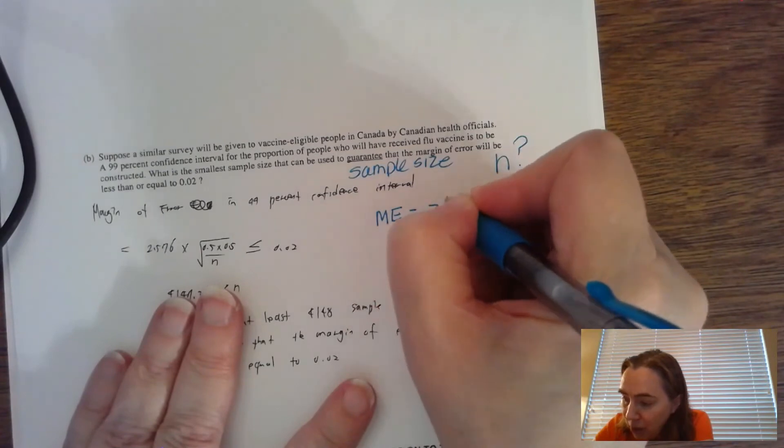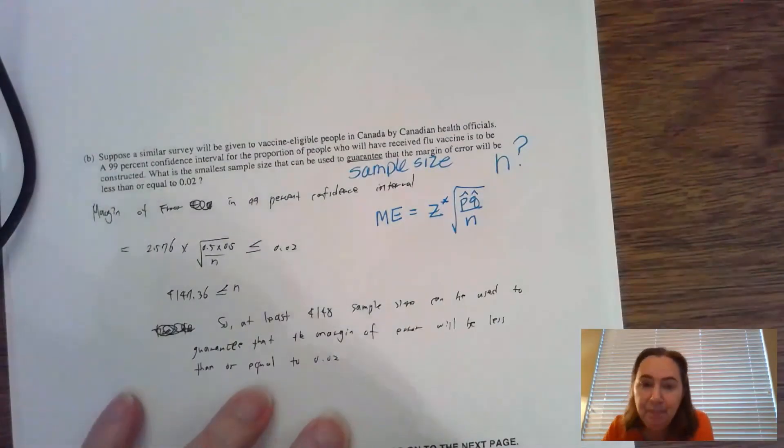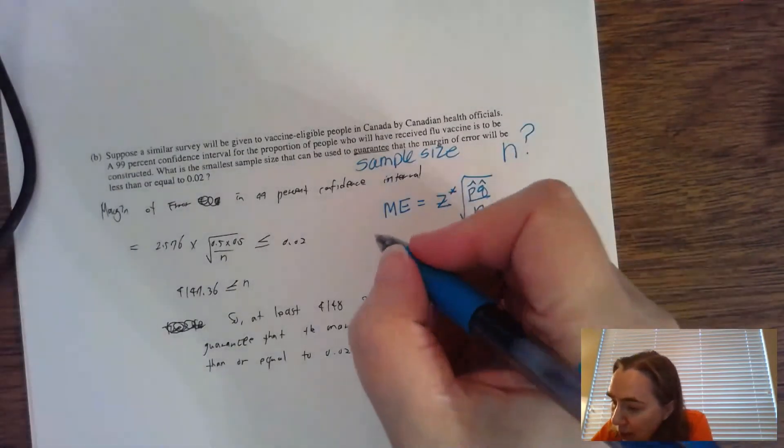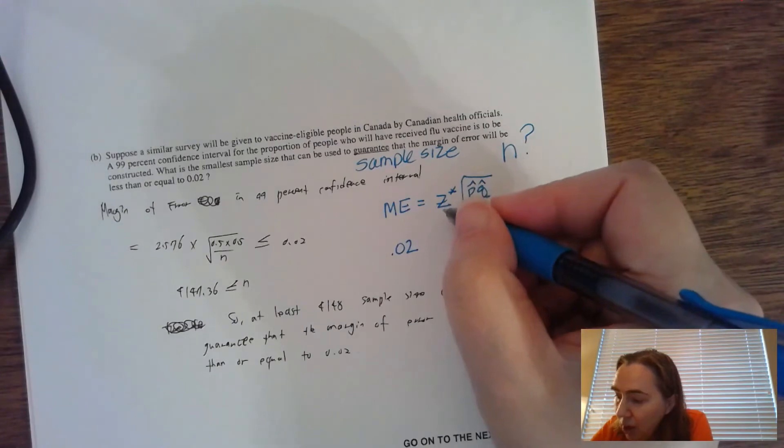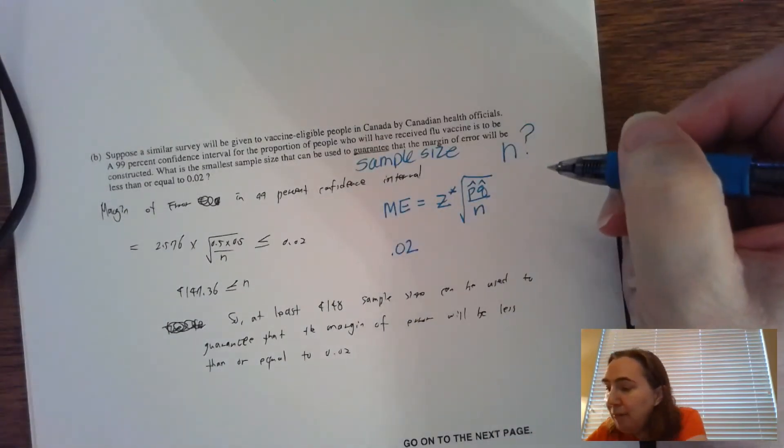This person shows some pretty nice work. We know that ME (margin of error) is equal to z* times the standard error. For a proportion, it's going to be z* times the square root of p-hat·q-hat over n. Unfortunately, that's not going to give you any credit—you have to show substitution into the formula. Our margin of error they want us to use is 0.02 (two percent).